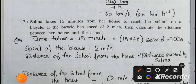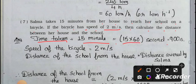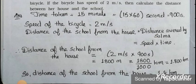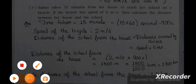Question number seven: Salma takes 15 minutes from her house to reach her school on a bicycle. If the bicycle has a speed of 2 meter per second, calculate the distance between her house and the school. Time taken = 15 minutes = 15 × 60 = 900 seconds. Speed = 2 m/s. Distance = speed × time = 2 × 900 = 1800 meter = 1800 ÷ 1000 = 1.8 km. The distance of the school from the house is 1.8 km.